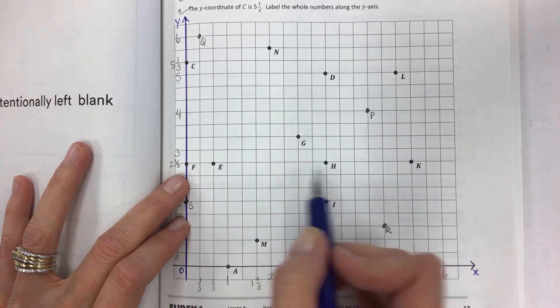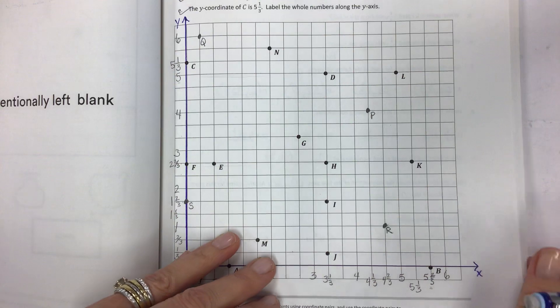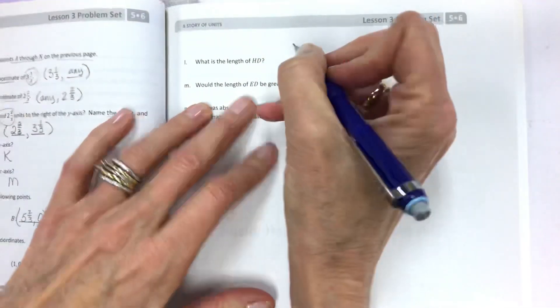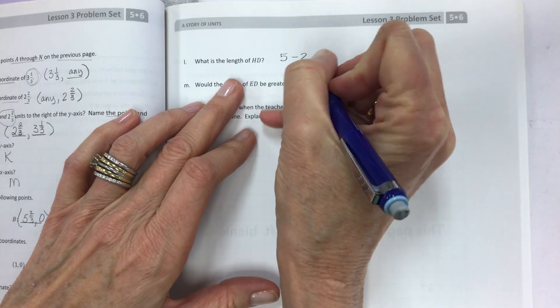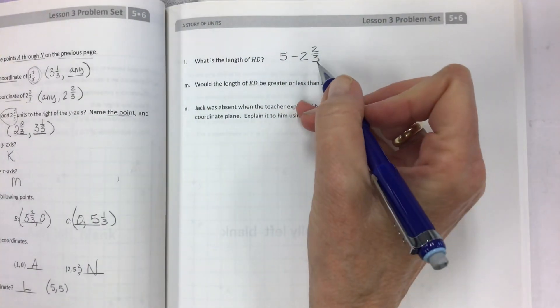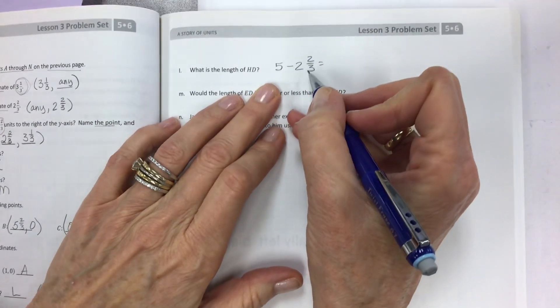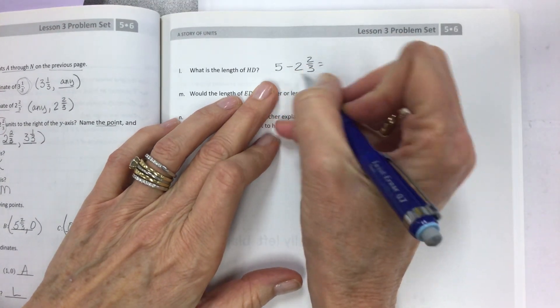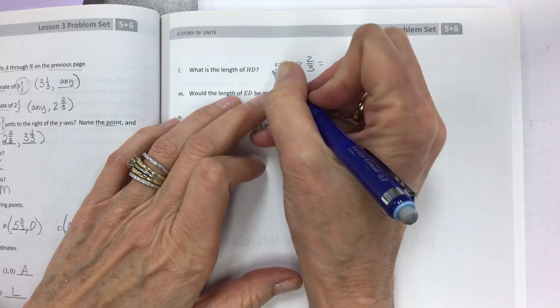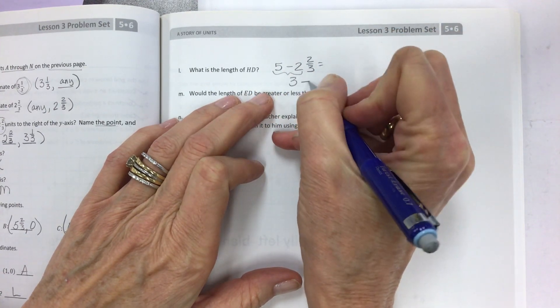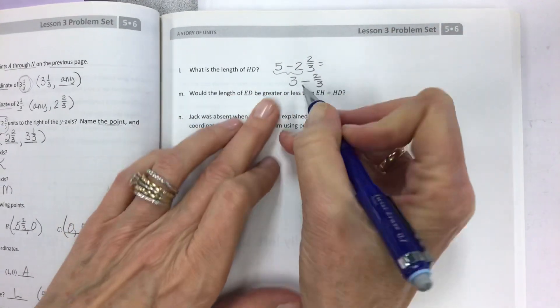So it's five minus two and two thirds. So do that over here. Five minus two and two thirds. And you can give yourself a number line, or you can do the strategy of subtracting the whole numbers. So five minus two is three, but you still have to take away the two thirds.